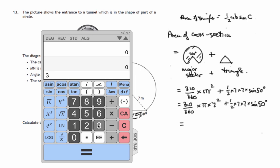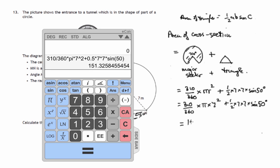So first off, 310 divided by 360, that fraction of pi times 7 squared. We've then to add one half of, that's 0.5 times 7 times 7 times whatever the sine of 50 is. Now if you're using a trig function like sine, you have to make sure you're in degrees. And that comes to 151.32 and so on.